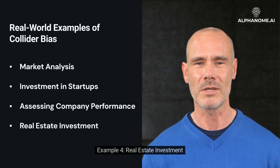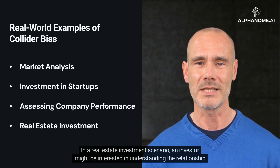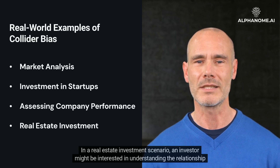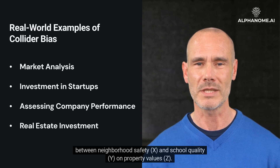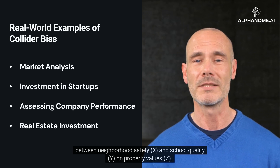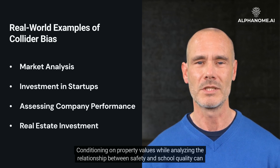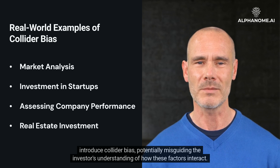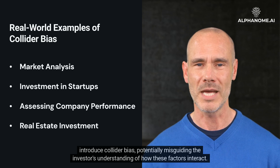Example 4: Real Estate Investment. In a real estate investment scenario, an investor might be interested in understanding the relationship between neighborhood safety (x) and school quality (y) on property values (z). Conditioning on property values while analyzing the relationship between safety and school quality can introduce collider bias, potentially misguiding the investor's understanding of how these factors interact.